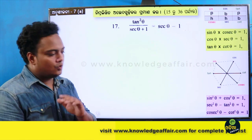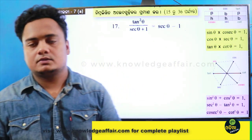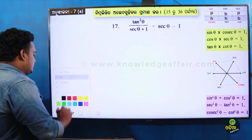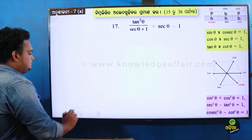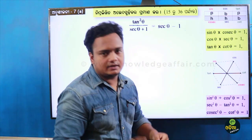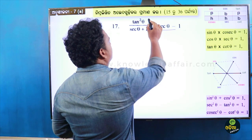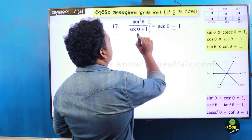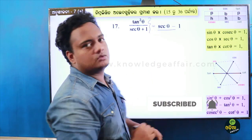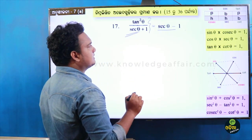This is a very interesting question. The concept of formula makes it easy. Question: tan squared theta divided by sec theta plus 1, equal to sec theta minus 1. RHS is going to be sec theta minus 1. Let's prove it. In LHS, we have to check the sec theta format, the denominator part.